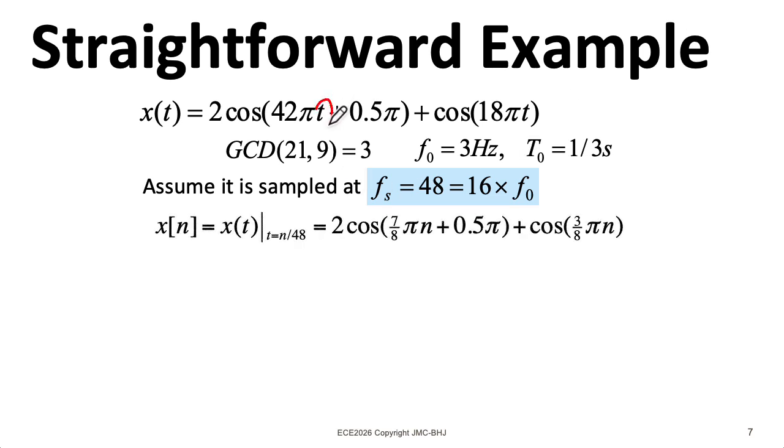To create the sampled signal, I plug in n divided by 48 for t, which gives me this expression here. Notice I have a digital frequency here of 7 over 8π and a digital frequency here of 3 over 8π.